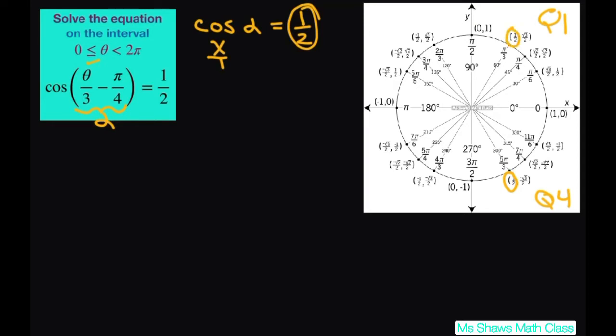So that means my alpha equals π divided by 3 and 5π divided by 3. So that means this whole argument has to equal π divided by 3 or 5π divided by 3 in order to get the 1 half. So I need to solve for my theta that when I divide it by 3 and then subtract π over 4 I will get one of these.